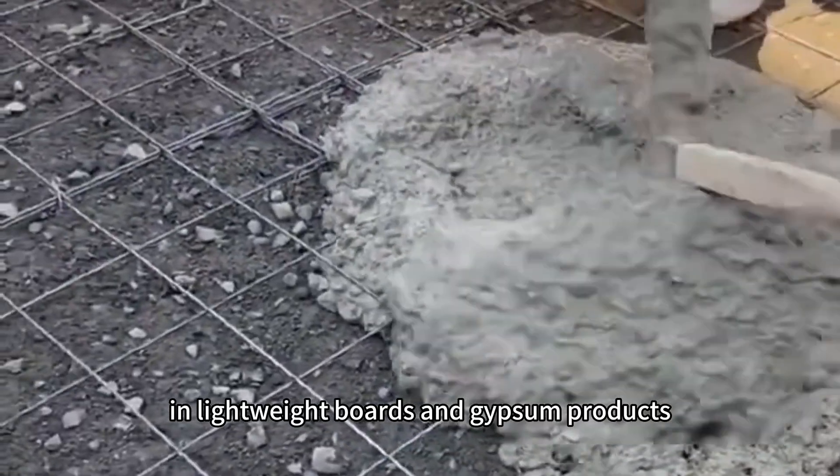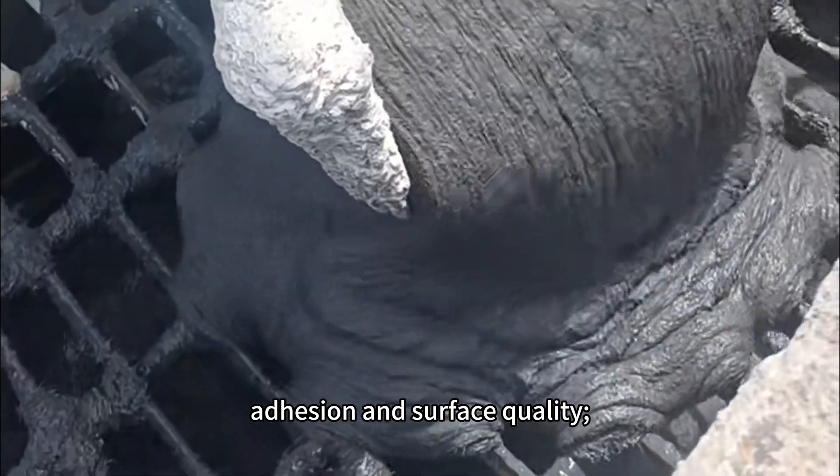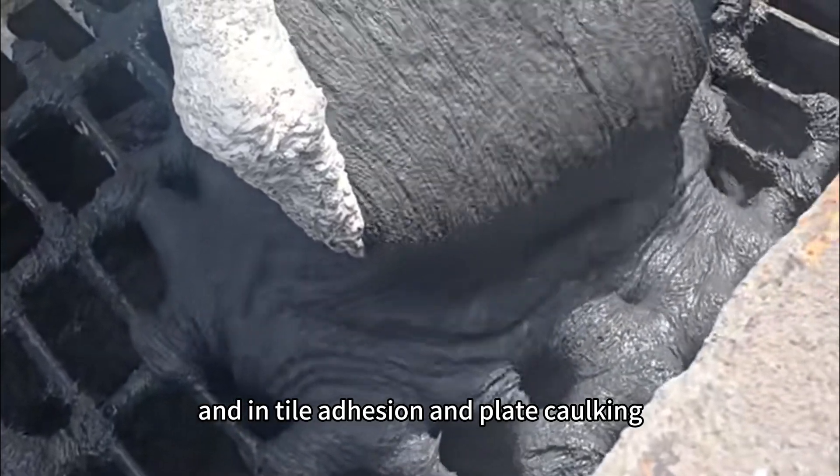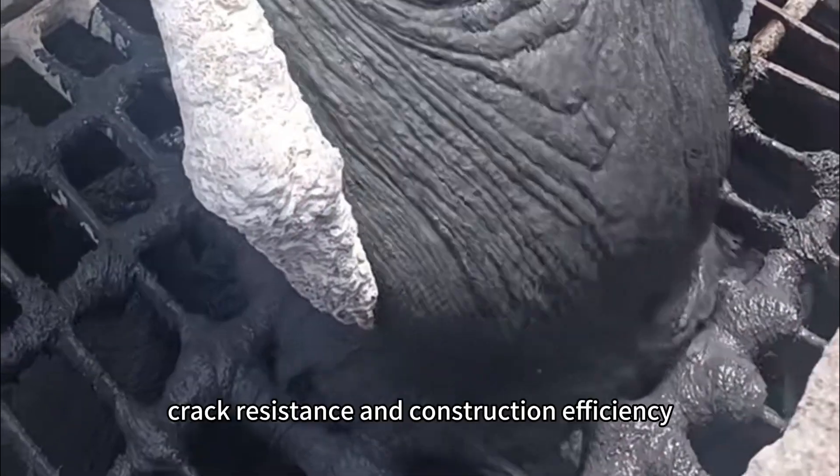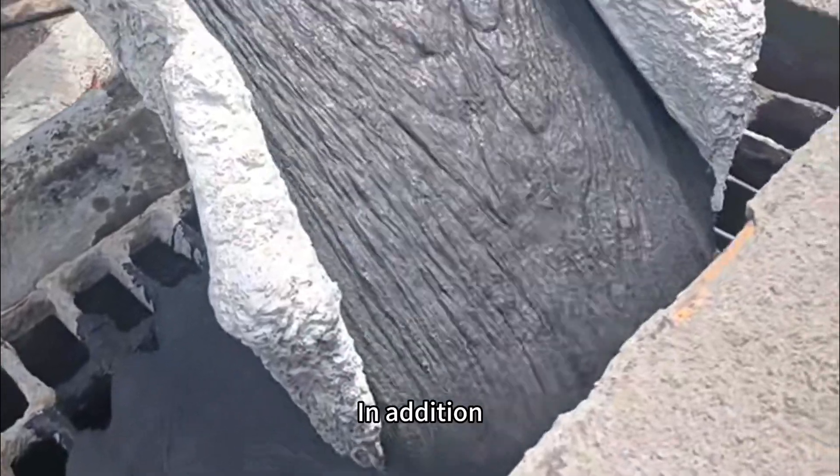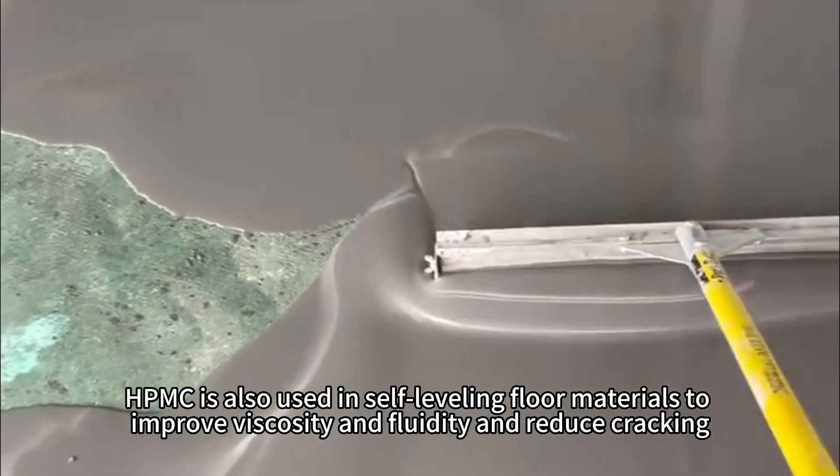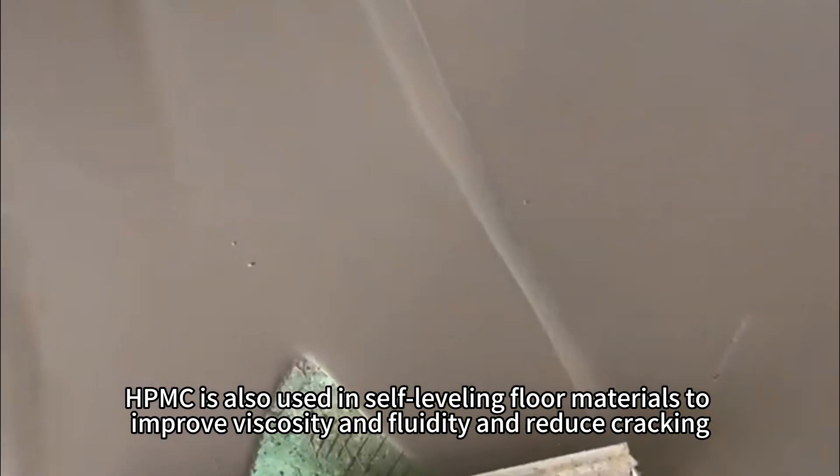In lightweight boards and gypsum products, it improves the processability, adhesion, and surface quality. In tile adhesion and plate caulking, it enhances adhesion, crack resistance, and construction efficiency. In addition, HPMC is also used in self-leveling floor materials to improve viscosity and fluidity and reduce cracking.